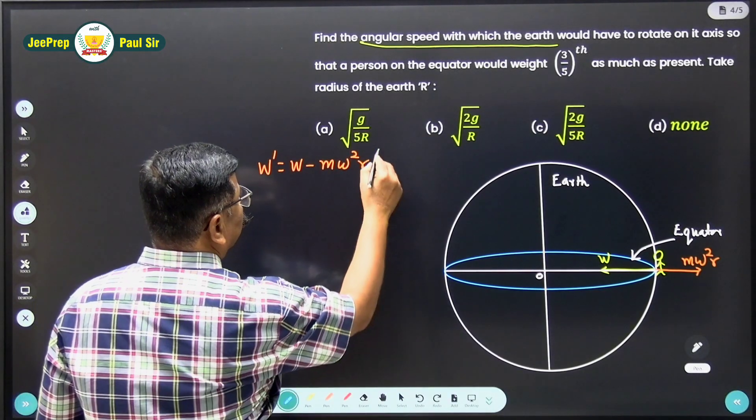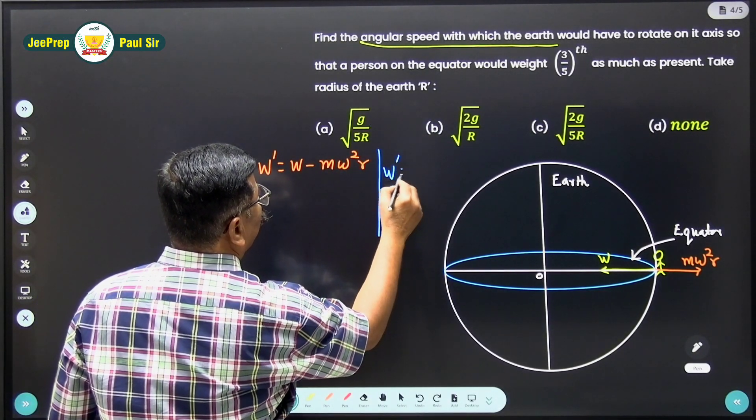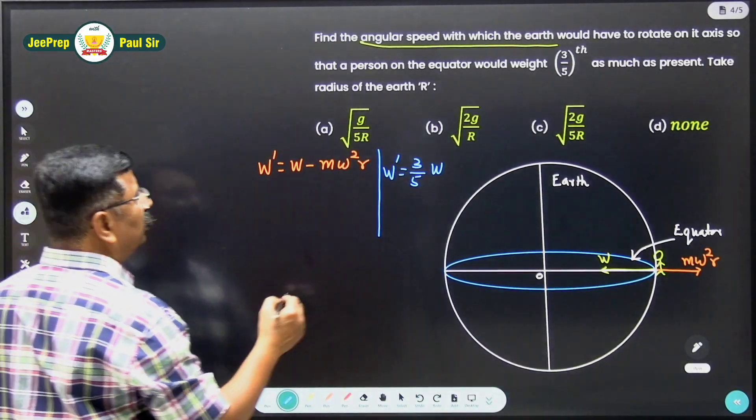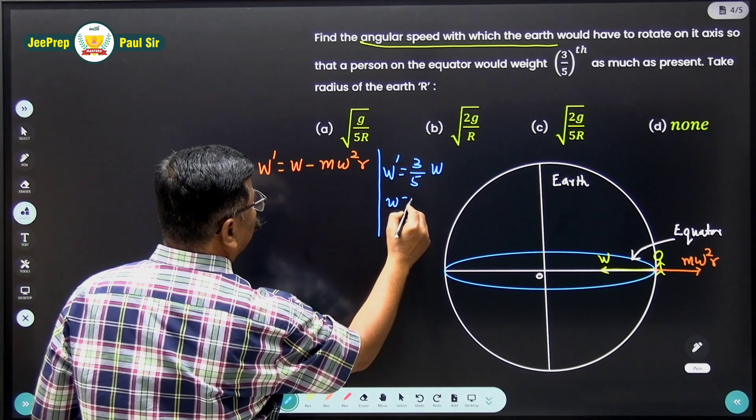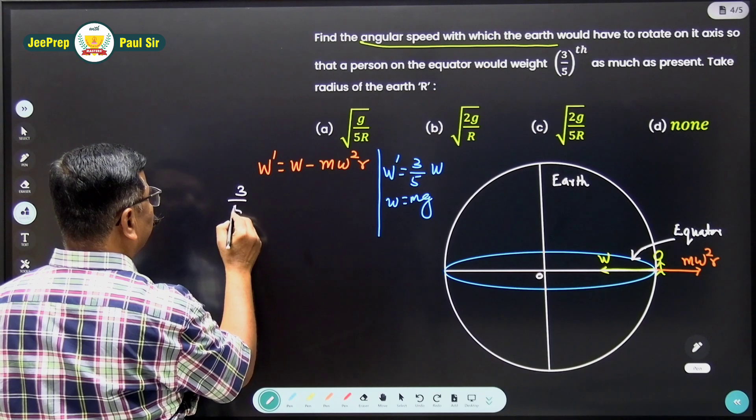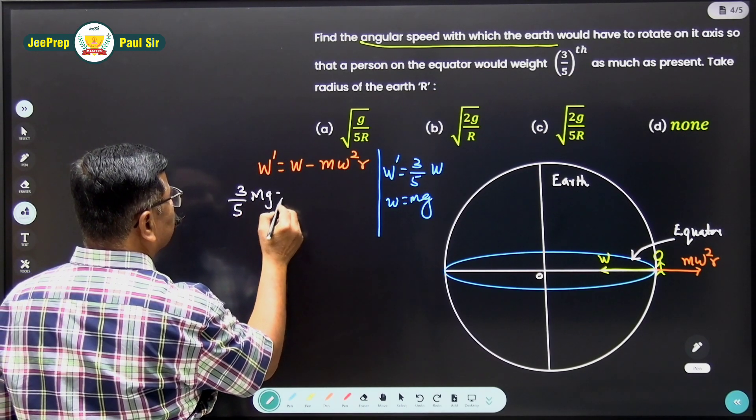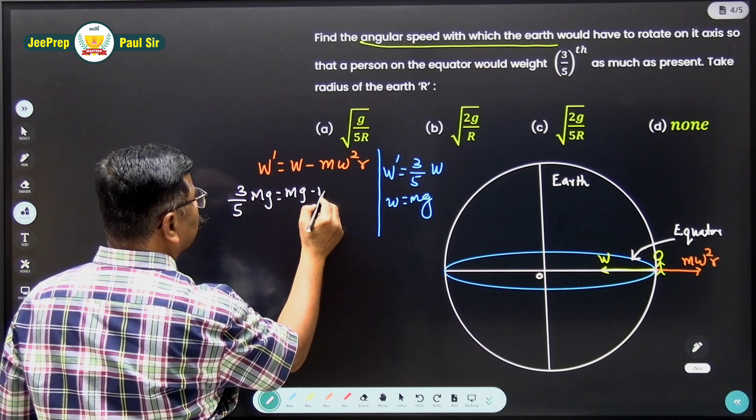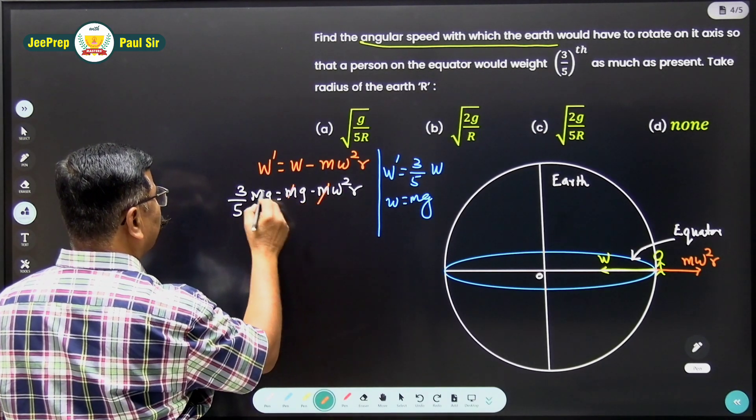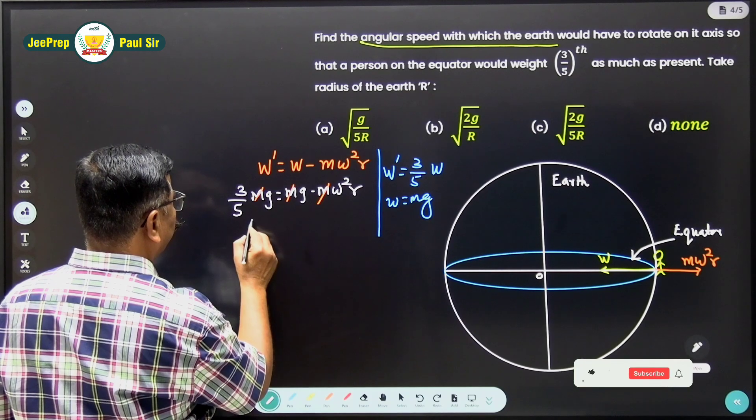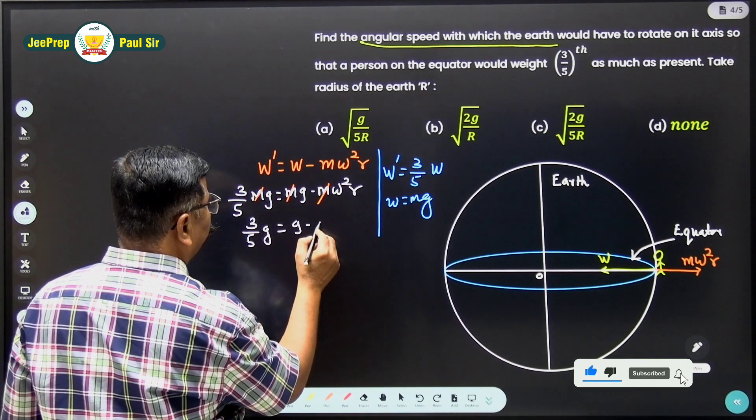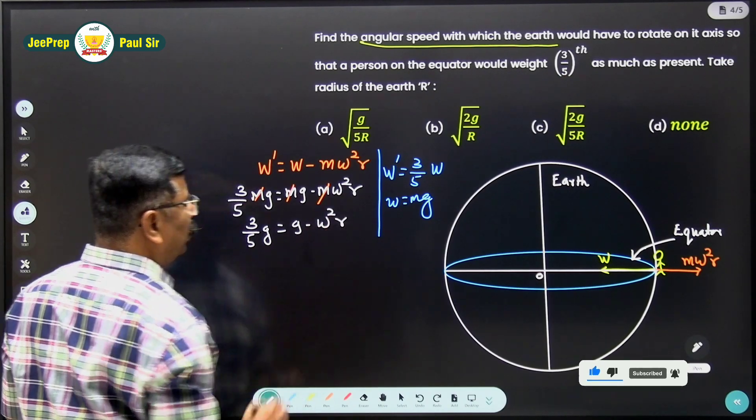But actually they have mentioned that W' is 3/5 times present weight of the person and we know that W equals Mg. So let's work out this. So 3/5 Mg equals Mg minus M omega square r. Now this M will cancel and then we will get very simple equation 3/5 g equals g minus omega square r.